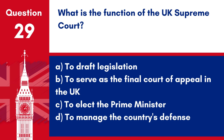Question 29. What is the function of the UK Supreme Court? A. To draft legislation. B. To serve as the final court of appeal in the UK. C. To elect the Prime Minister. D. To manage the country's defence. Answer: B. To serve as the final court of appeal in the UK. The UK Supreme Court functions as the final court of appeal for civil and criminal cases.